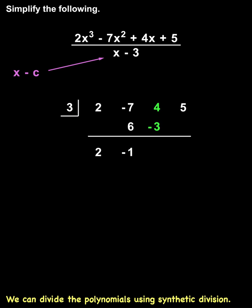Next, we add 4 plus negative 3 to get 1. Next, we multiply the 3 in the box times 1 to get 3, and we put the 3 under the 5.